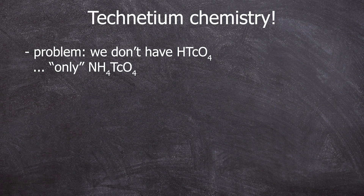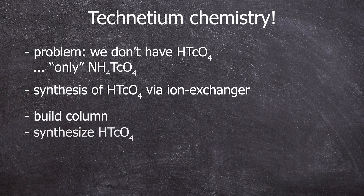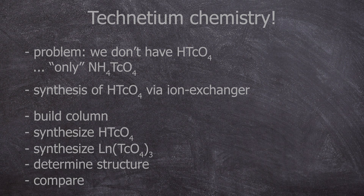Unfortunately, we don't have pertechnic acid — we have dissolved ammonium pertechnetate. But you can replace the ammonium cation with simple H⁺ by using a suitable ion exchange resin. For this, we need to build a column. So: build the column, produce pertechnic acid, react with lanthanide oxide, and compare the crystal structure with other lanthanide pertechnetates.